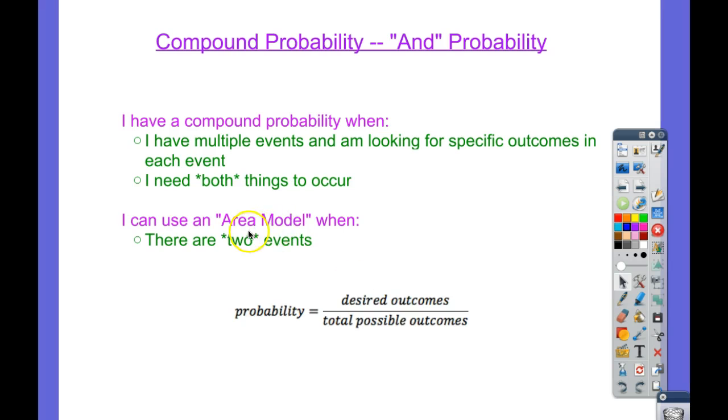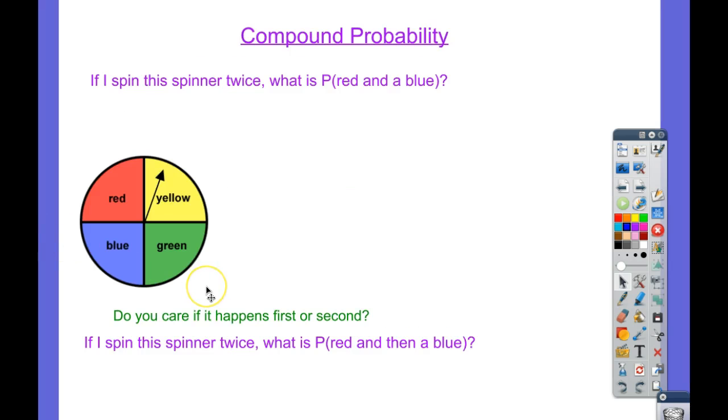One way is to use an area model. An area model only works when there are two events, but it's pretty easy from there. I'll show you why it only works in two events and we'll see here.